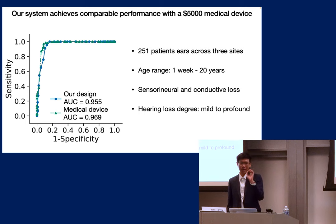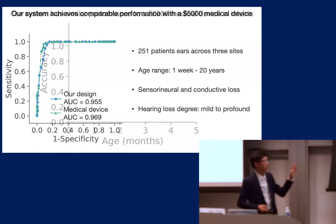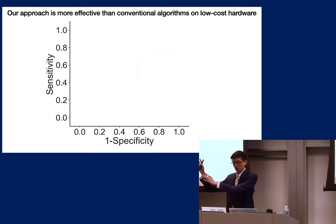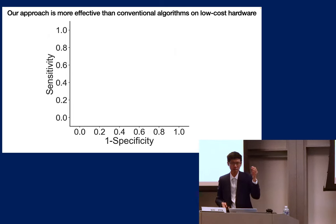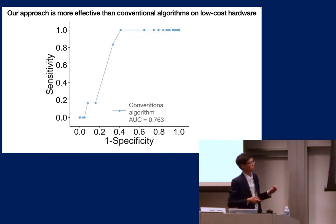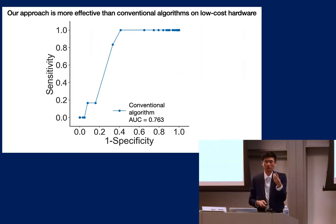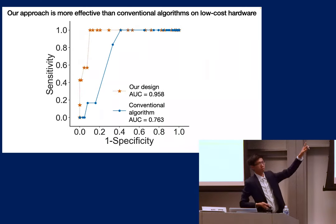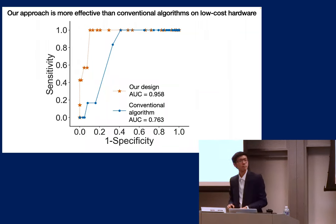We're not doing echo cancellation — we're finding the duration over which reflections occur. Using the echo cancellation algorithms from the $5,000 clinical device doesn't work well on our low-cost hardware. But using the algorithm I described — co-designing hardware and software together — gives much better performance, illustrating that you need custom algorithms for low-cost devices.